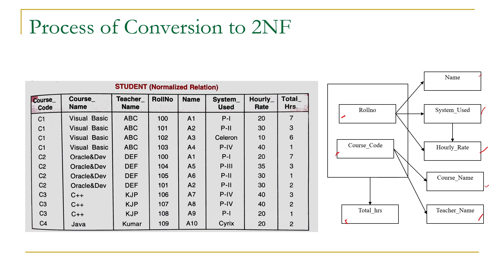Now it is time to apply second normal form to this dataset. A relation is in second normal form if and only if it should be in first normal form — and this table is in first normal form because for every row-column combination we have a single value — and every non-key attribute should be fully functional dependent on the primary key.